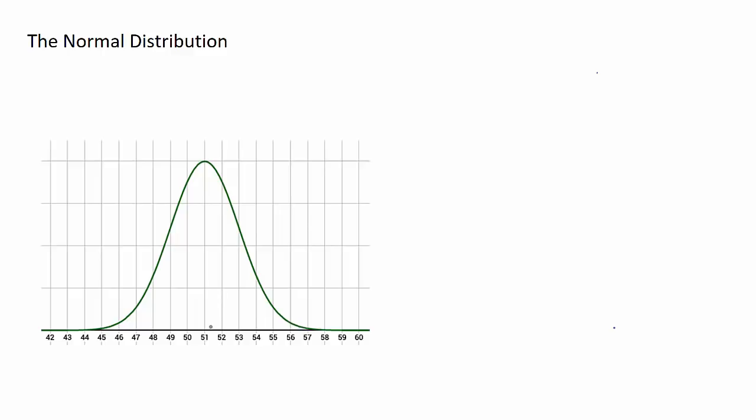And if that was the case the average mark would be 51. So 51 here represents the mean or the average, and that is always the center of the normal distribution curve. Now one of the other characteristics of a normal distribution curve is that they are symmetrical on the left and the right.